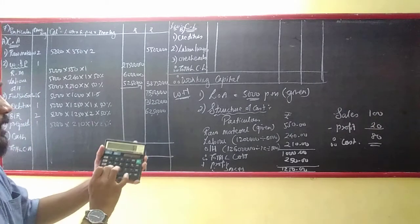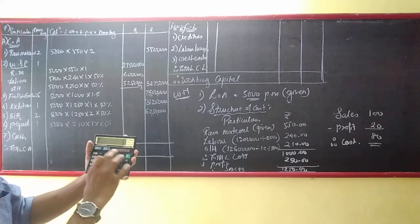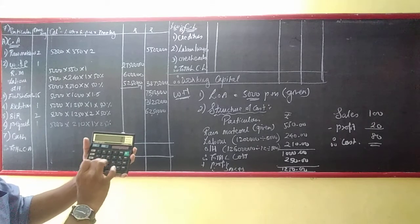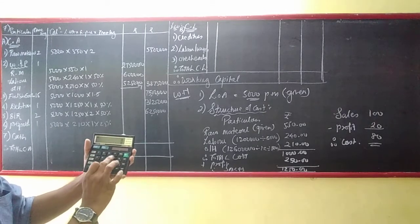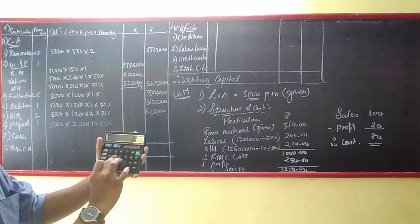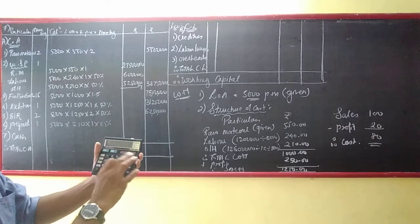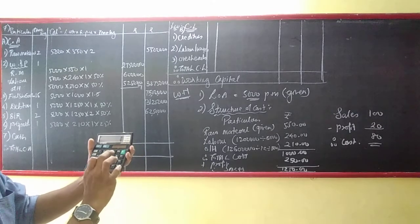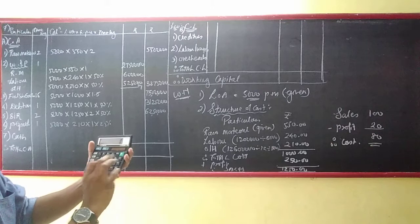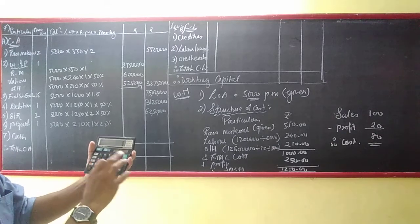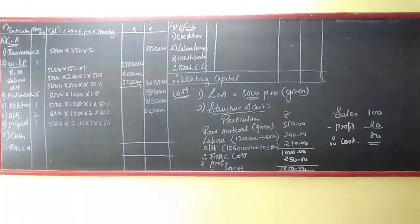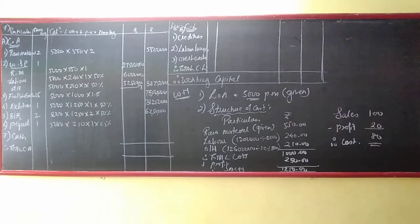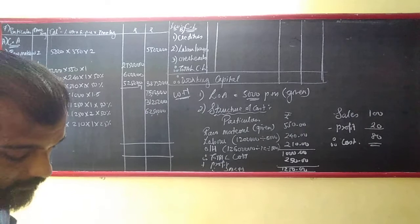So 5,000 × ₹210 × 25% = ₹2,62,500 for prepaid expenses.